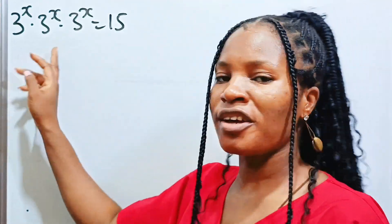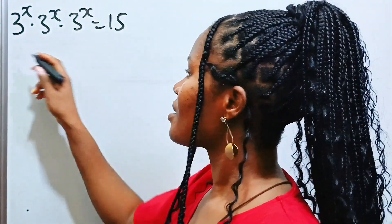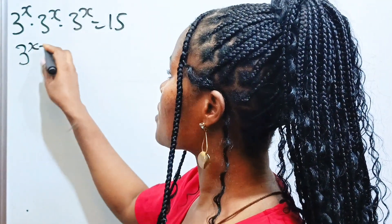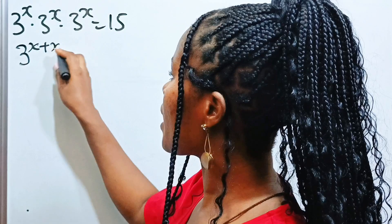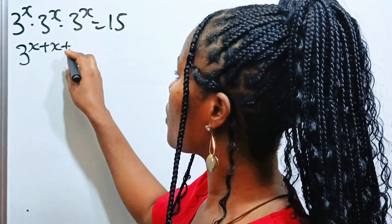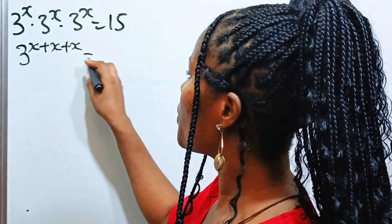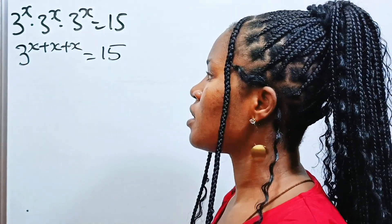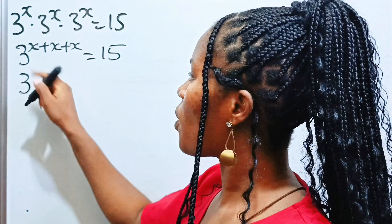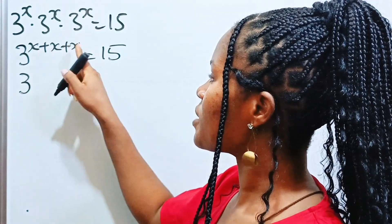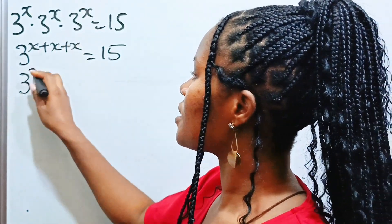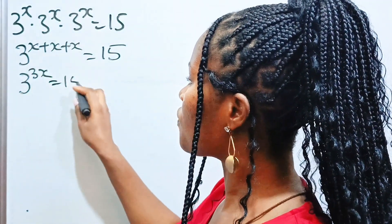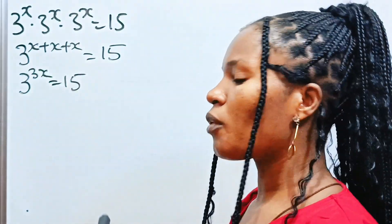We are going to express this as 3 to the power of x plus x plus x, which is equal to 15. So we have 3 to the power of 3x is equal to 15.